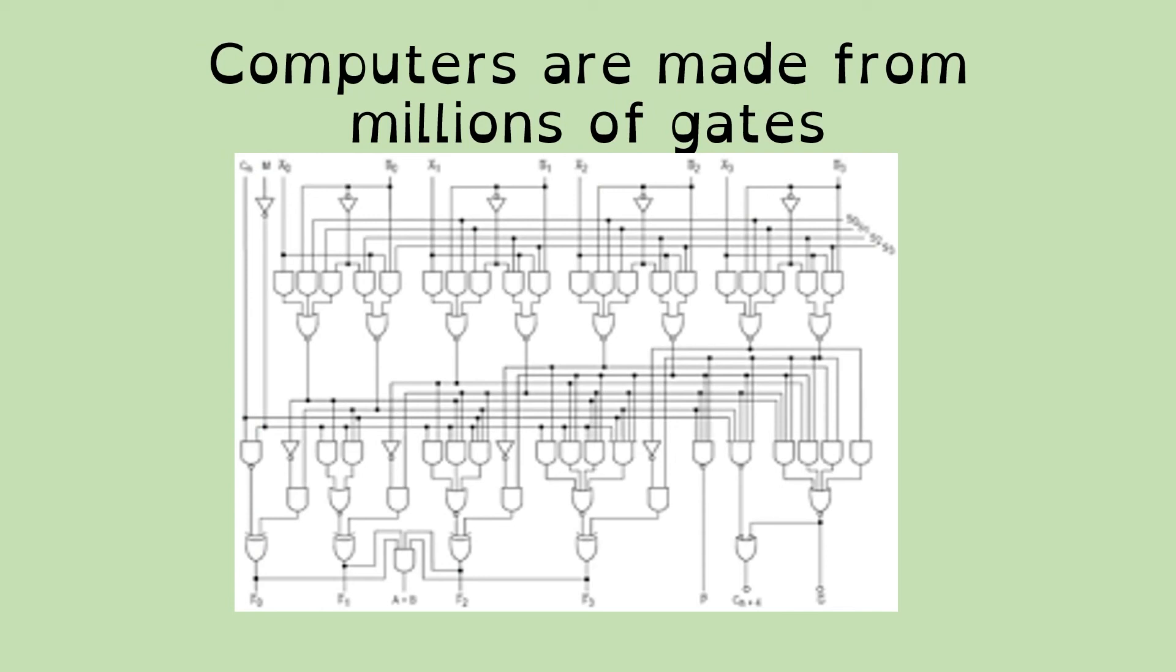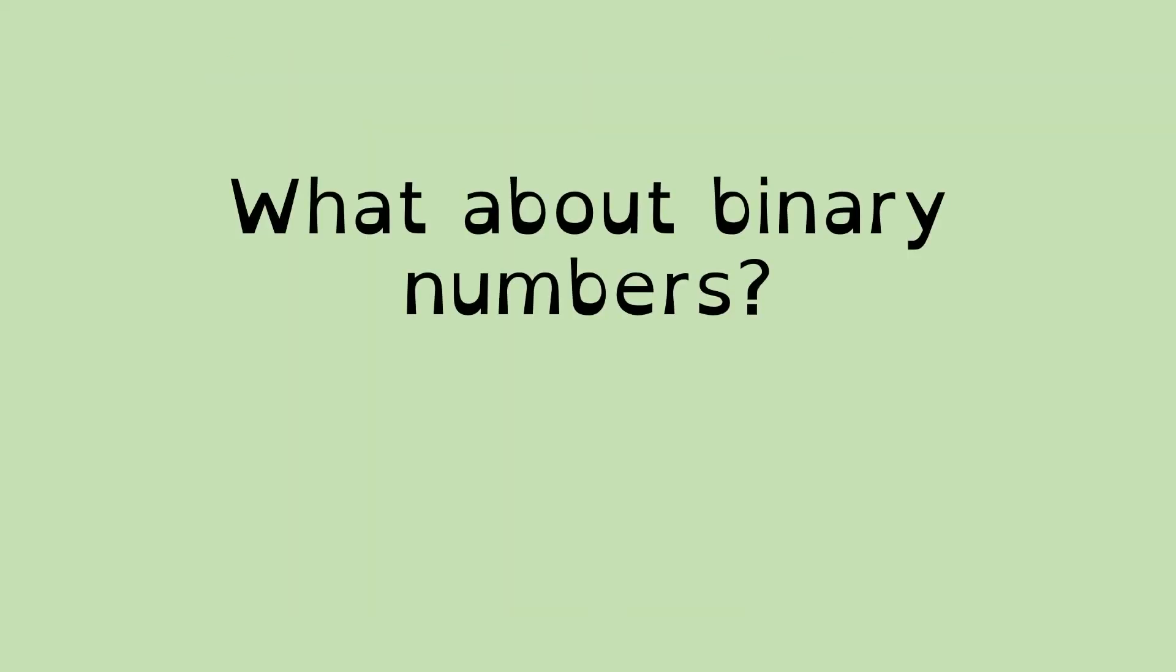Computers, as we have them these days, are made from millions of these gates. And it is possible to get little black silicon chips that have individual gates on them. But microprocessors combine many, many gates together in one small piece of silicon that then gets stuck on your board and soldered together with wires to other bits that you've got.